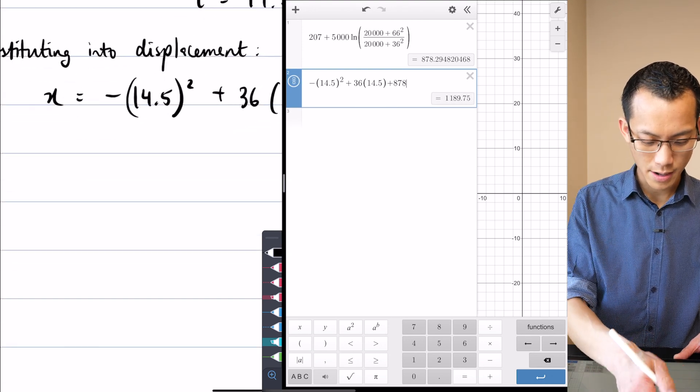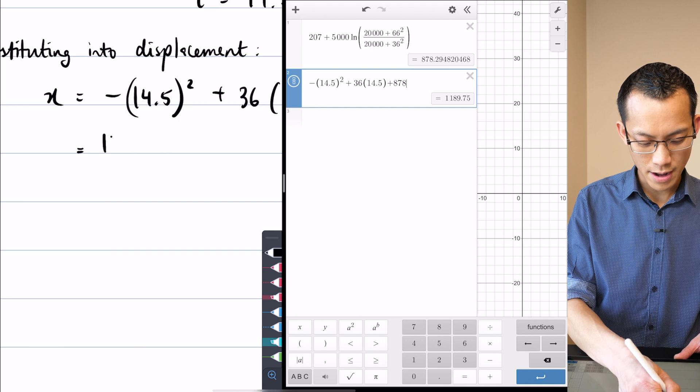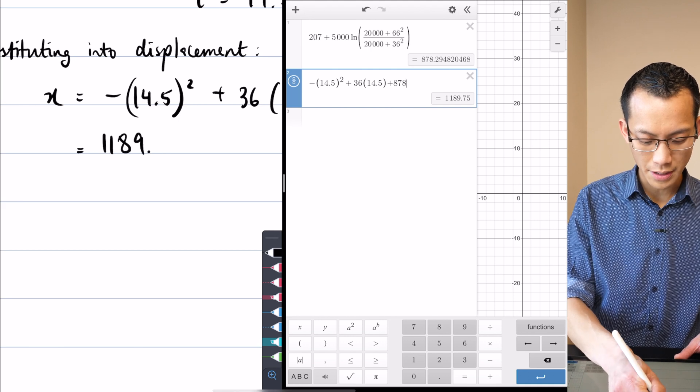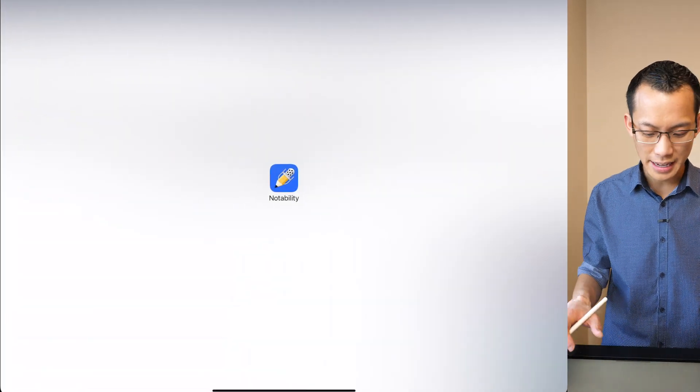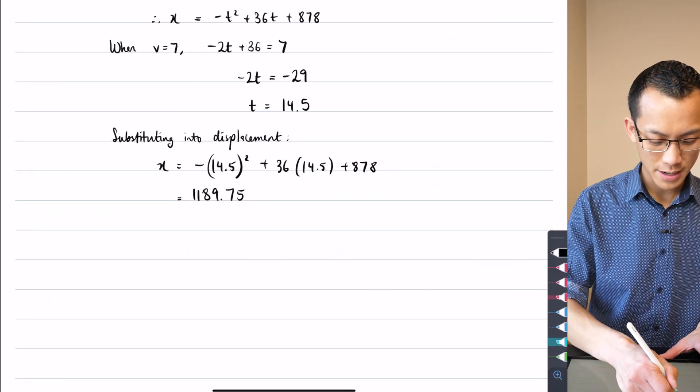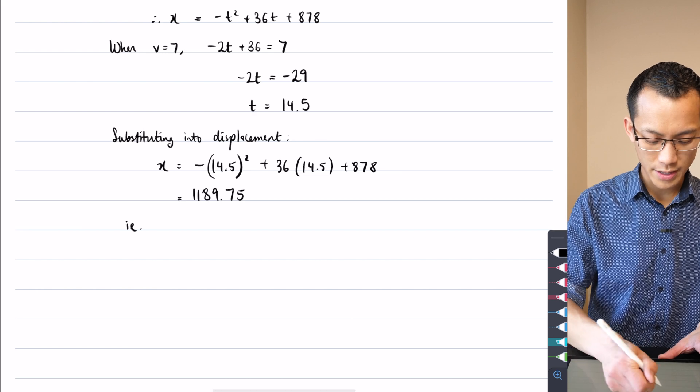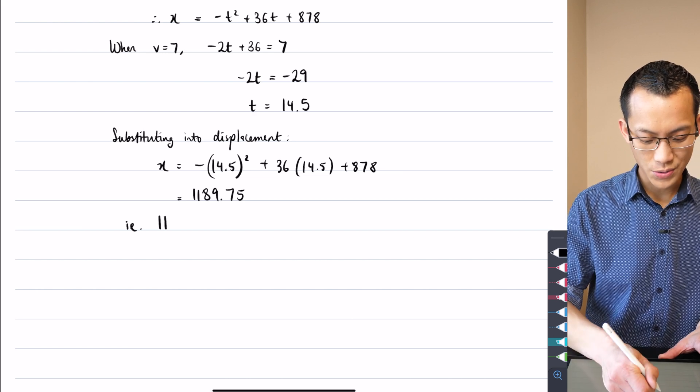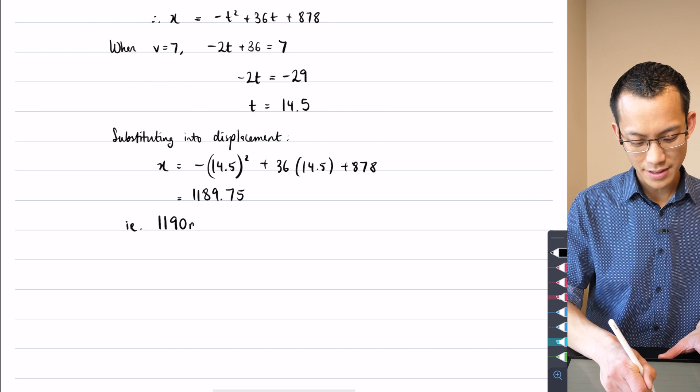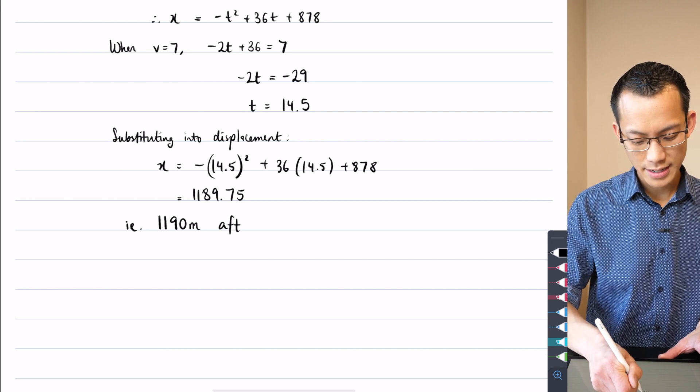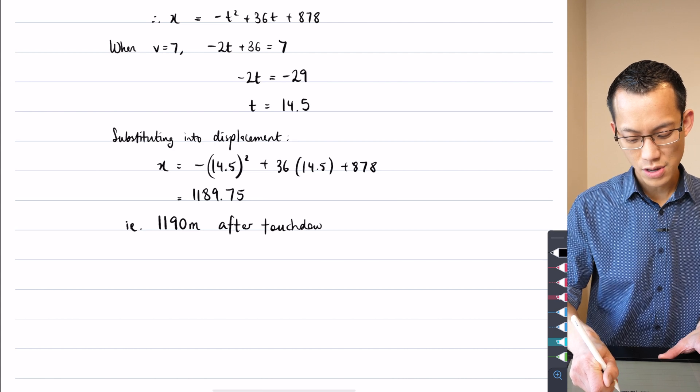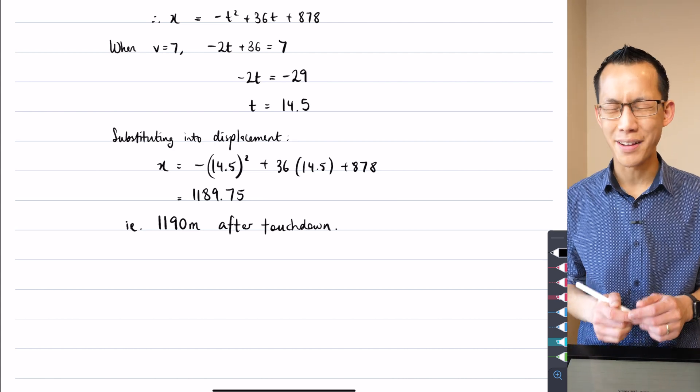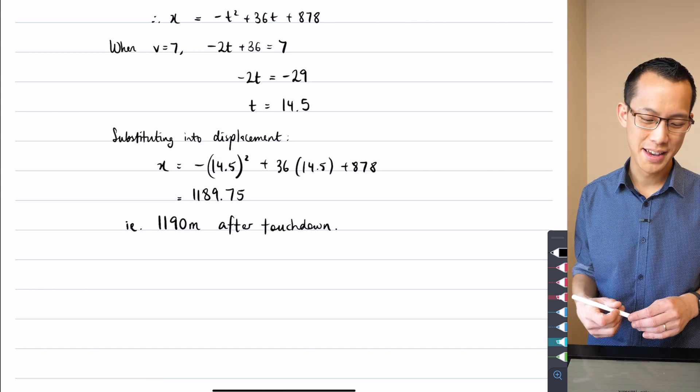Of course, I'm getting fairly round numbers because all of the decimals were approximated in the previous step, but that is close enough for me. Again, I'm pretty sure I want it to the nearest meter. So I'm going to say, in other words, 1190, because that rounds up, meters after touchdown. That's when I reach taxiing speed. So you can see my final answer doesn't depend on time, but I use time as my stepping stone to get there.